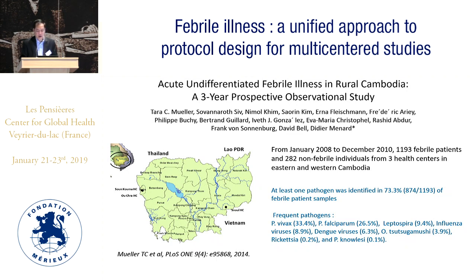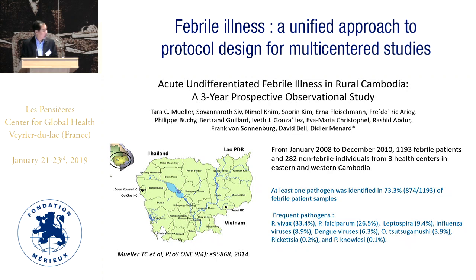Another study from January 2008 to December 2010, among 1,133 febrile patients and 282 non-febrile patients from three health centers in eastern and western Cambodia, reported that at least one pathogen was identified in 73.3 percent of febrile patient samples. The pathogens identified included Plasmodium vivax, Plasmodium falciparum, Leptospirosis, Influenza virus, Dengue virus, Orientia tsutsugamushi, Rickettsia, and Plasmodium knowlesi.